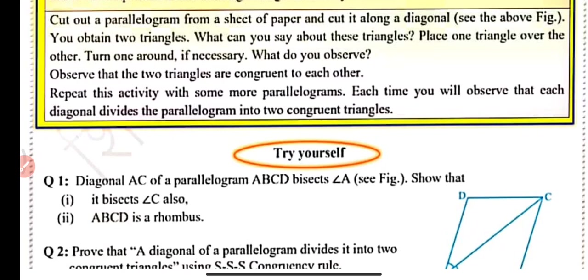Place one triangle over the other and turn one around. Observe that the two triangles are congruent to each other — they superimpose and coincide. Repeat this activity with some more parallelograms and each time you will observe that each diagonal divides the parallelogram into two congruent triangles.